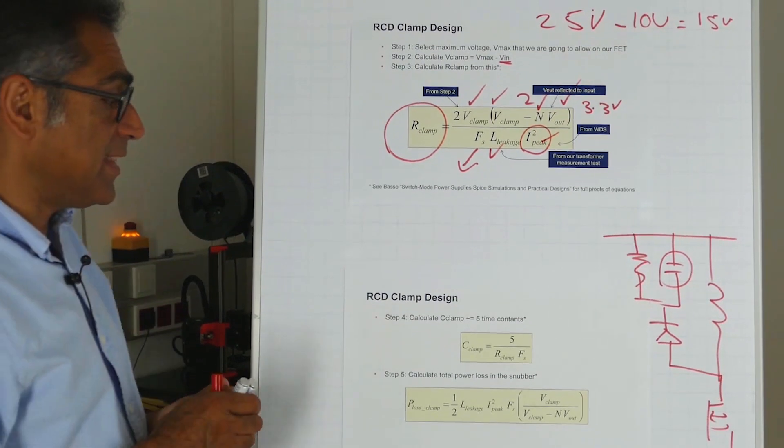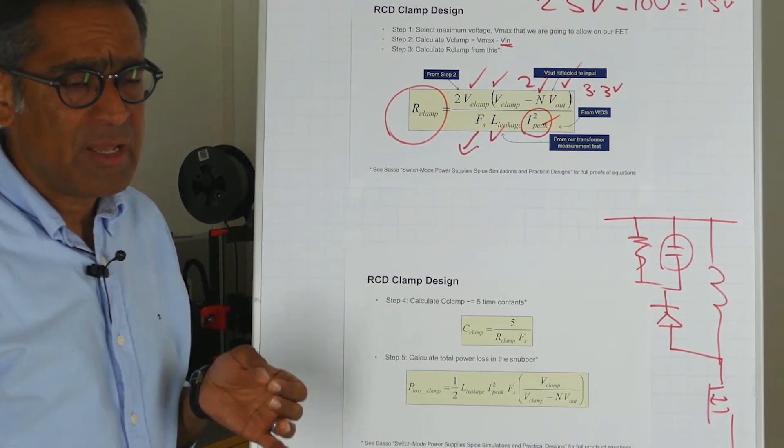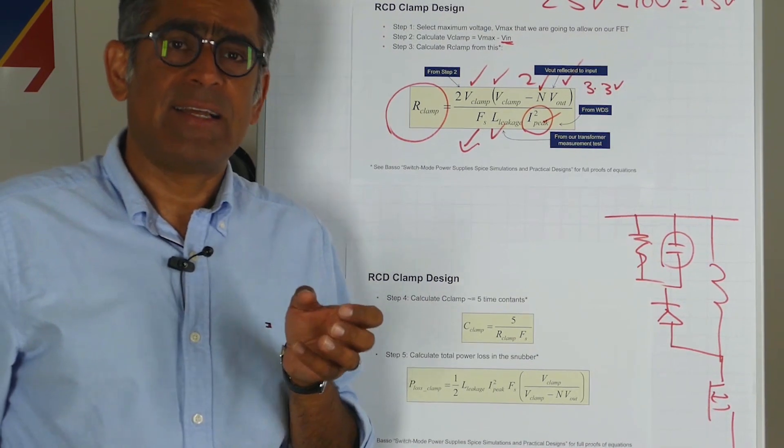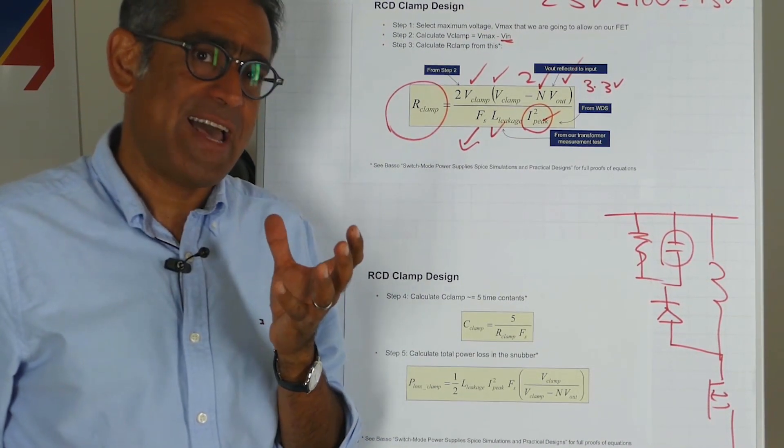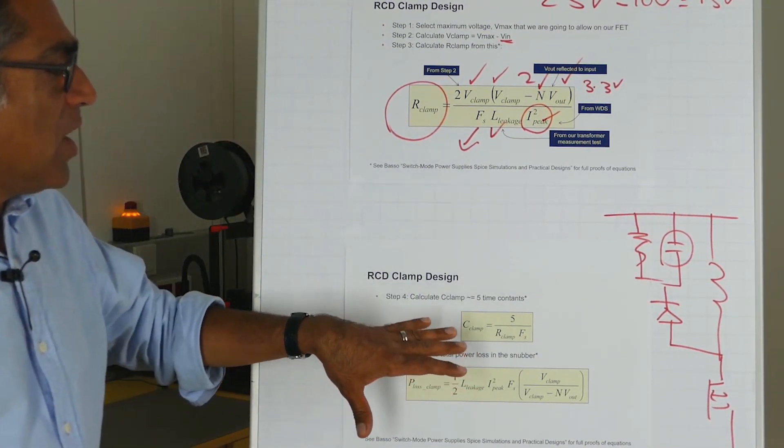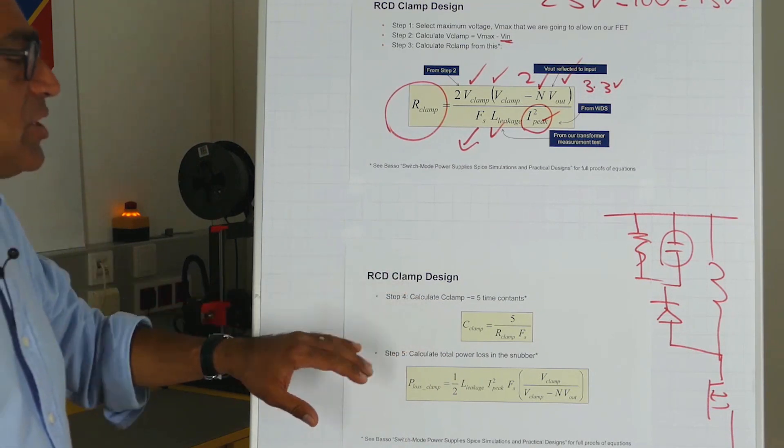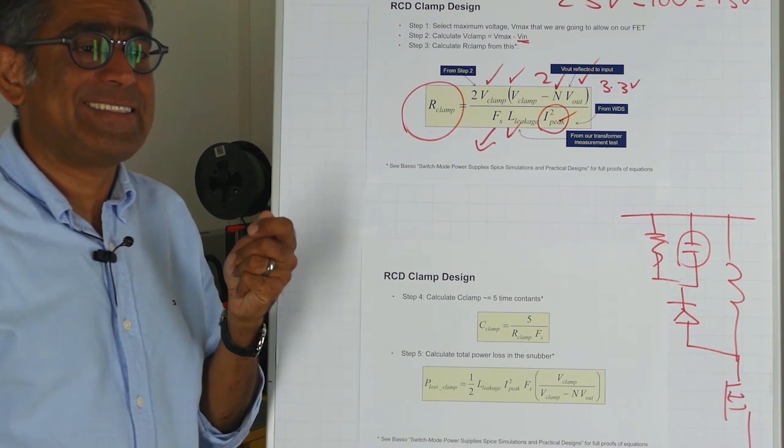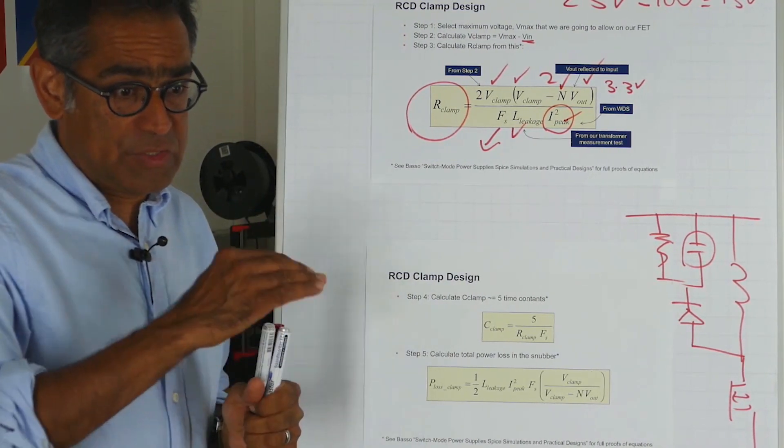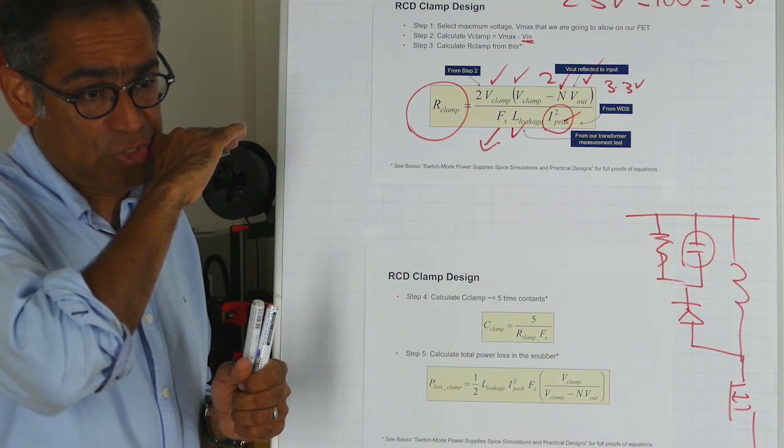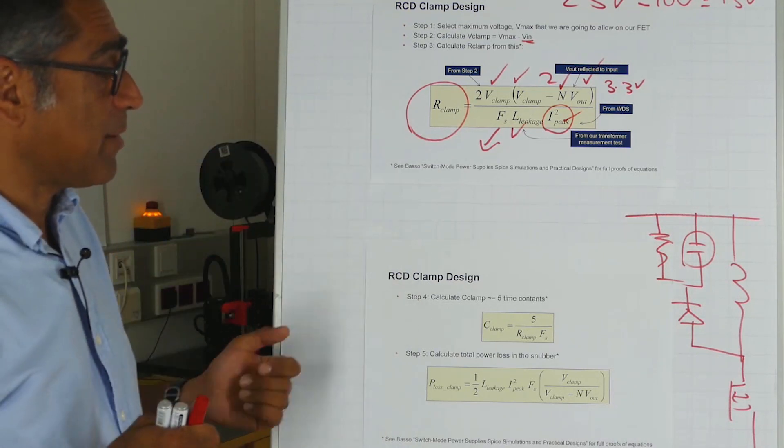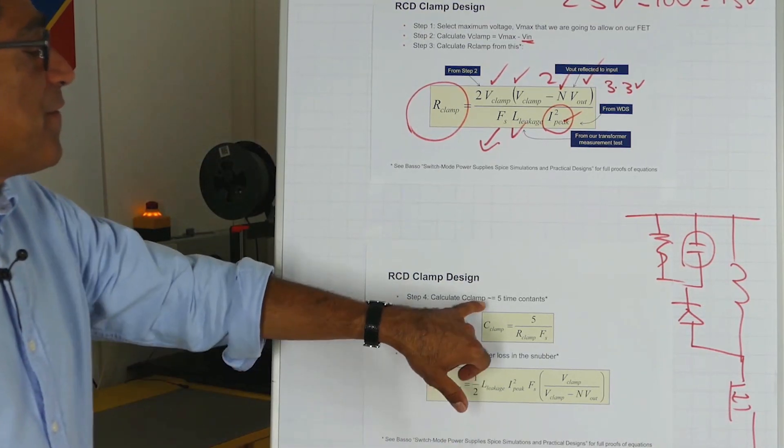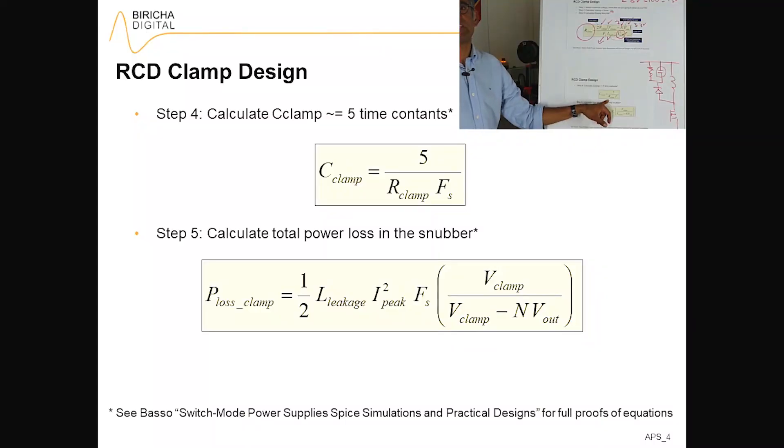Now unlike the snubber, where the value of the capacitor determined how much losses you had, the value of the capacitor on an RCD clamp is actually not determining the losses as such. It only needs to be big enough in order to make sure that the voltage remains constant during the period that the clamp is operating.